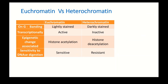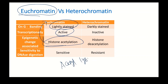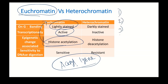Euchromatin is the chromatin which is expressed — it is lightly stained, transcriptionally active because the DNA is accessible. Acetylation of histone leads to euchromatin formation because acetyl lysine residues are recognized by certain proteins, which then recruit other proteins that physically move the nucleosome. In epigenetics, there are three terms: epigenetic writer, epigenetic reader, and epigenetic eraser.